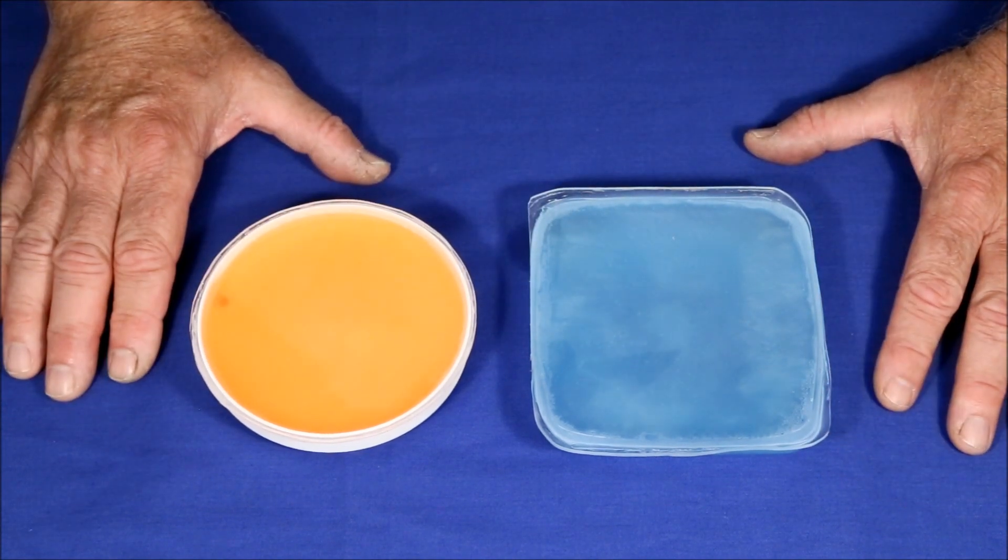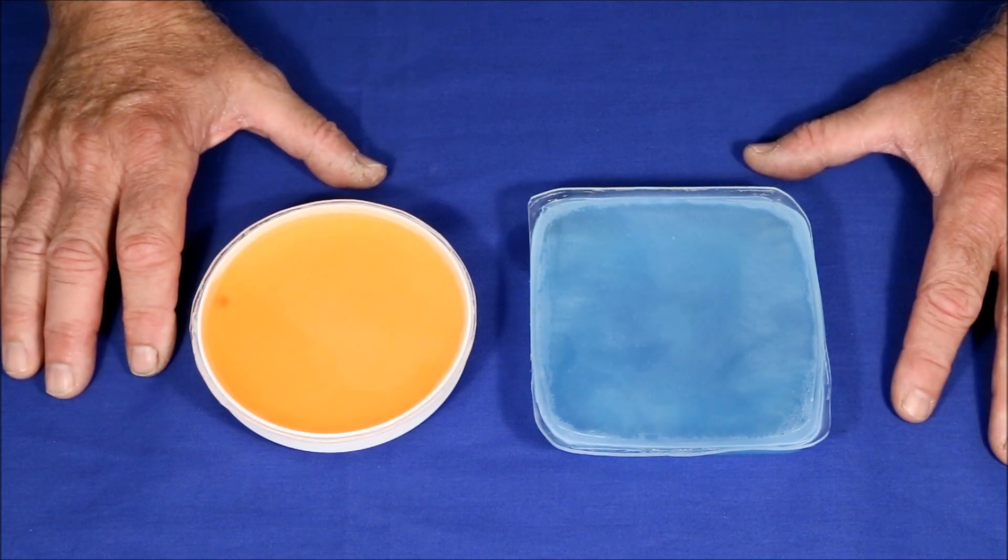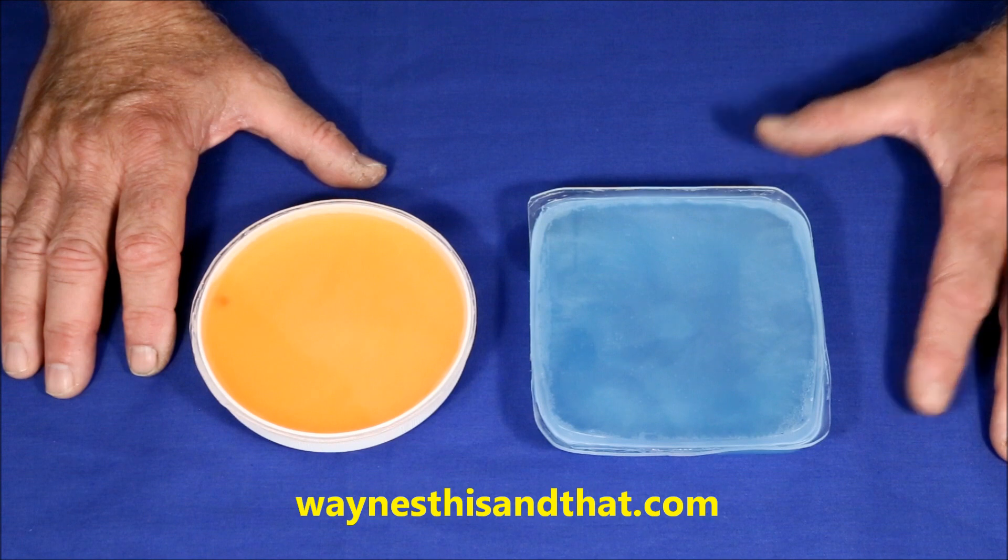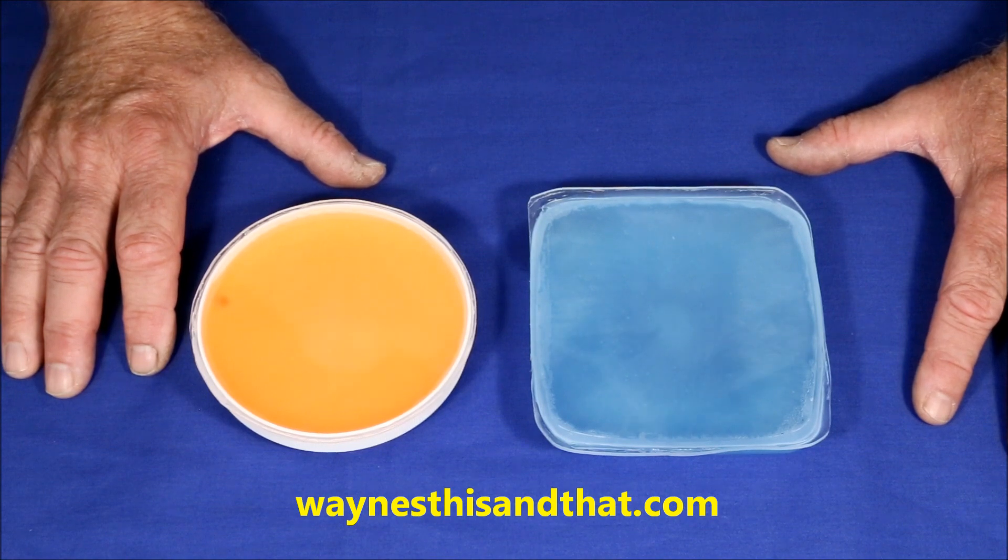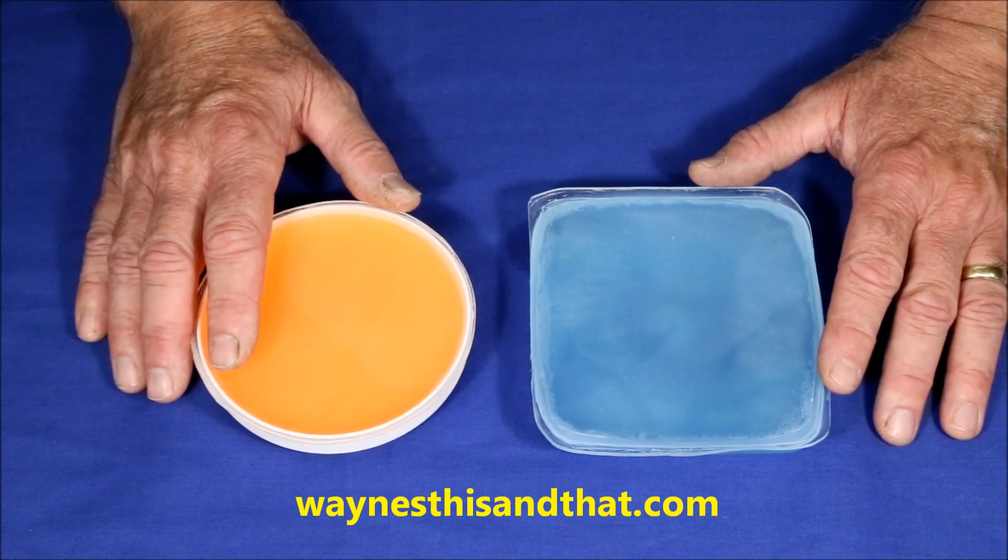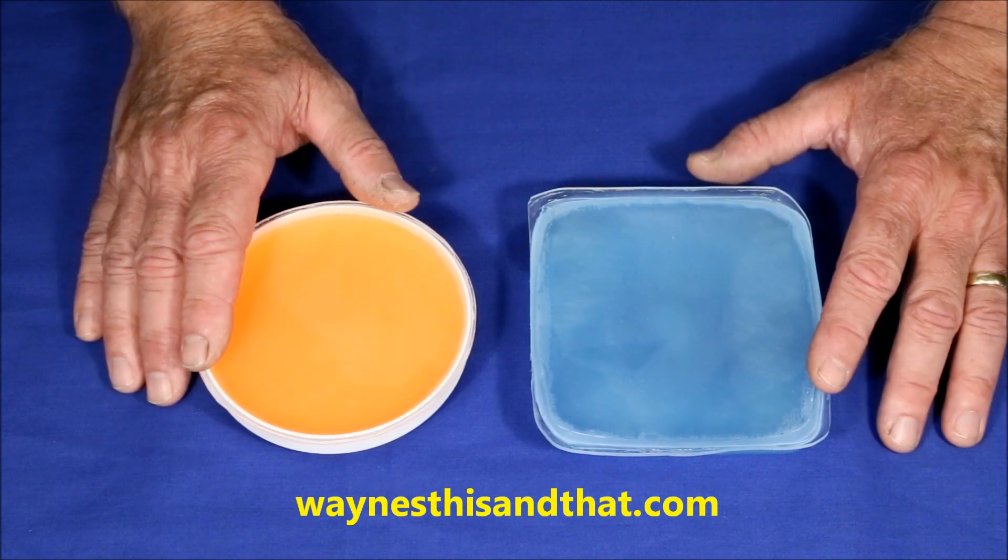Until they get posted, if you want more nerdy, techy articles like this one, try my main website at waynesthisandthat.com where you'll find 539 pages covering all sorts of similar projects. Everything from why wintergreen lifesavers flash blue when crushed, to the oddity of Fletschner colors. And as always, thanks for watching!